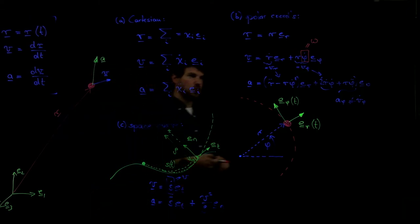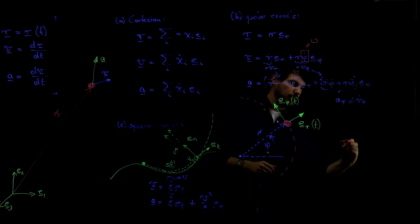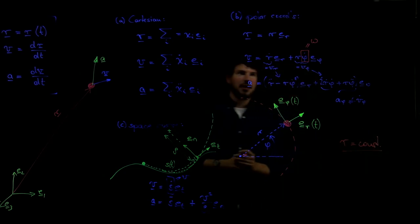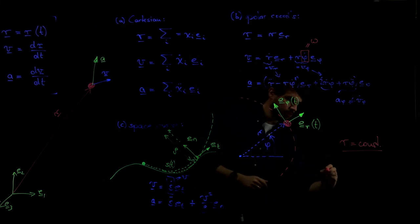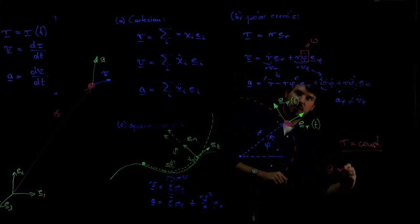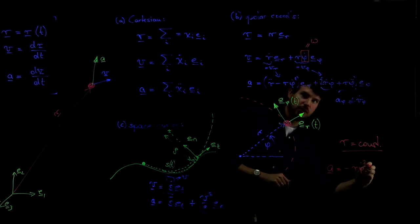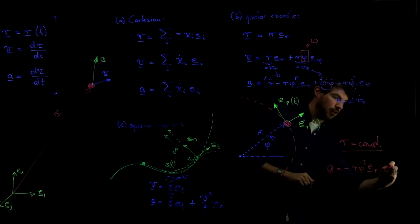This is pretty much a generalization of what we had for polar coordinates. Because a circle is nothing else but a special case of a space curve. In fact, that's the last thing I want to show. If we take this case over here and take the special case of r being constant, where we're moving on a circular path, let's take this as a special case, everything simplifies a lot. Especially our acceleration then becomes what? r double dot is zero, so all we're having is minus r phi dot squared times e r. And from here, we're getting plus r phi double dot e phi.